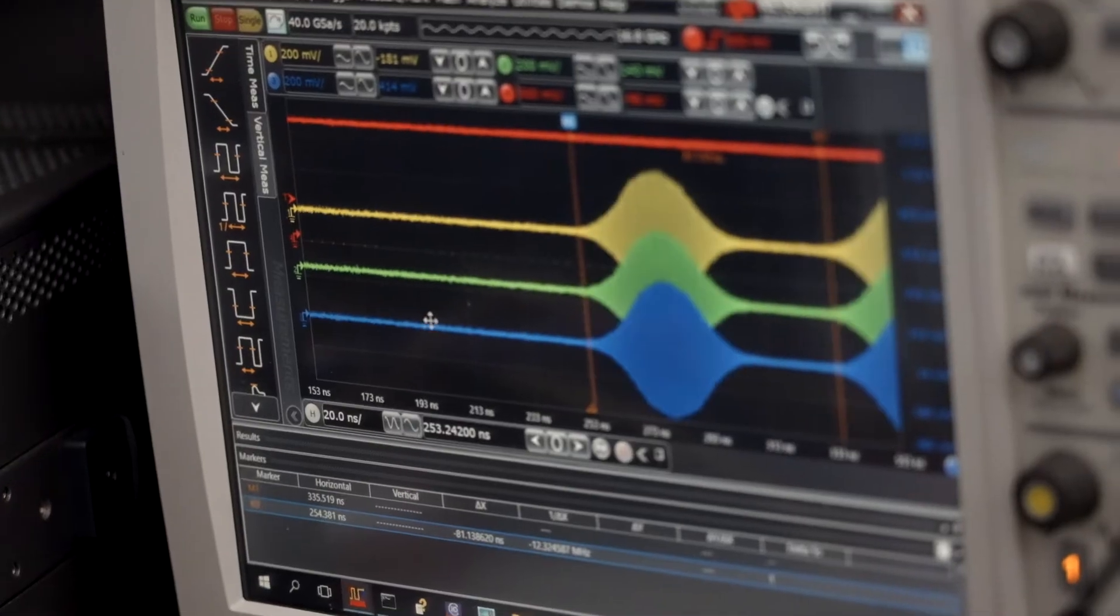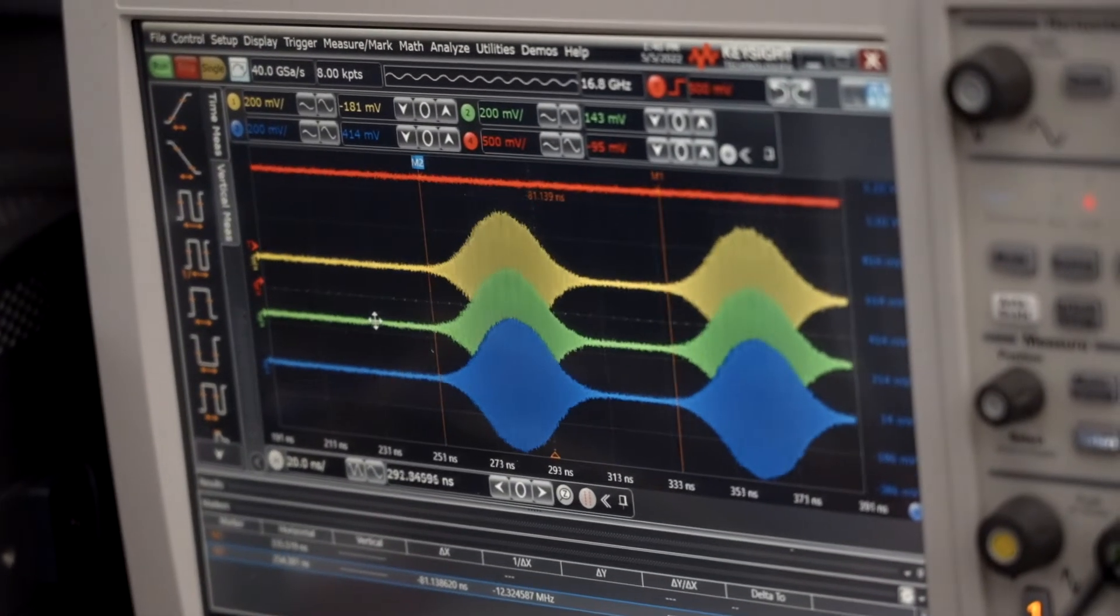For example, the M5300 AWG on receiving a trigger can do a phase change or an amplitude change or even play a pre-programmed waveform with the lowest possible latency.